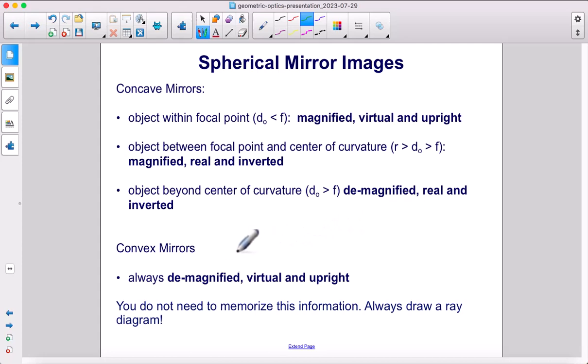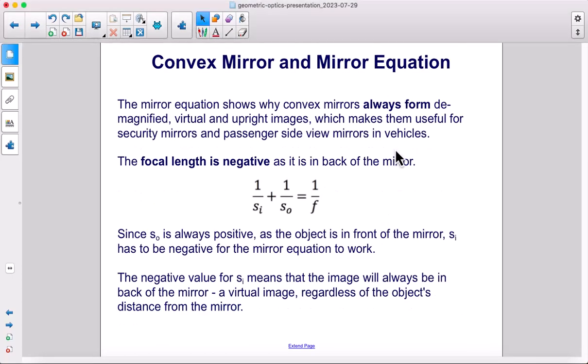For convex mirrors, the image is always demagnified, virtual, and upright. You don't need to memorize this information. Always draw a ray diagram. The mirror equation shows why convex mirrors always form demagnified, virtual, and upright images, which makes them useful for security mirrors and passenger side view mirrors in vehicles.